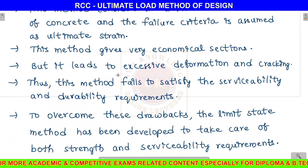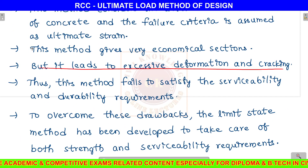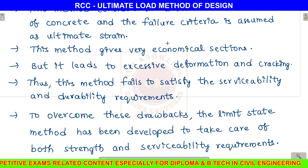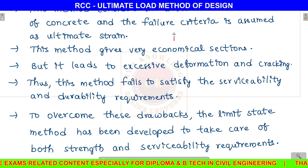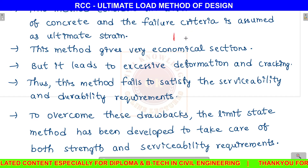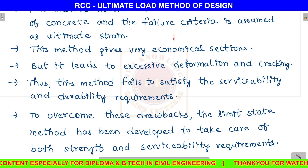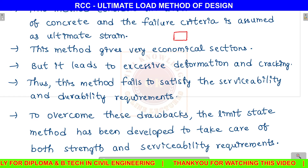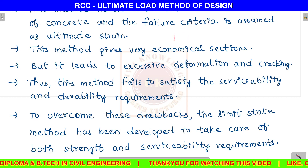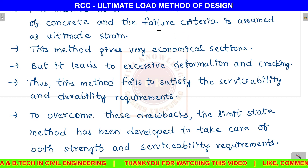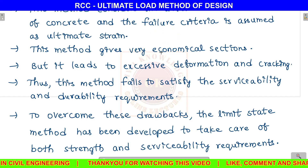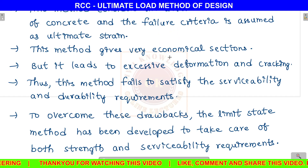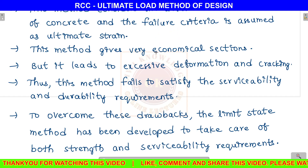The large sections in the working stress method also lead to excessive deformations and cracking. For example, in working stress method, a column might be 500 by 500 mm, whereas in the ultimate load method, it could be reduced to 250 or 300 mm. With working loads and working stresses, our members will still be able to handle the loads.